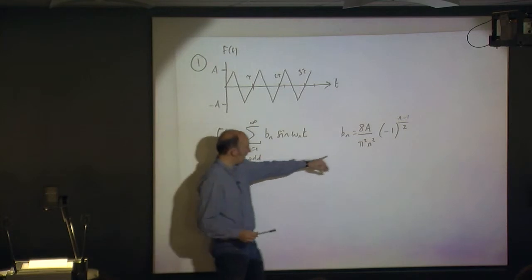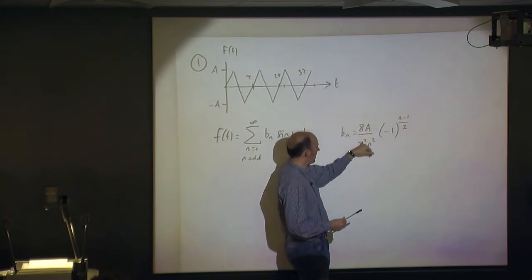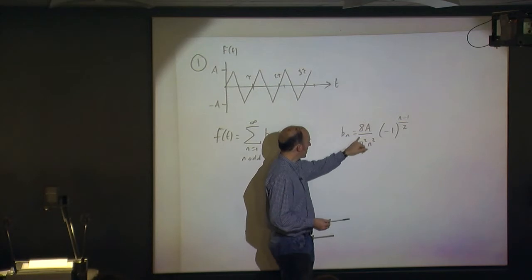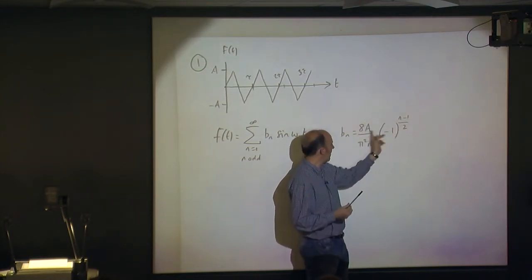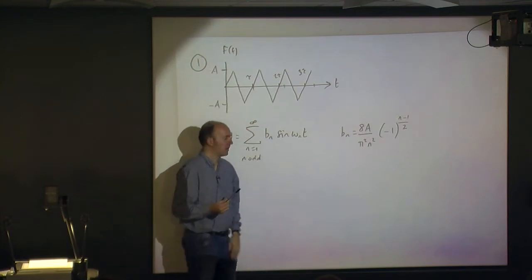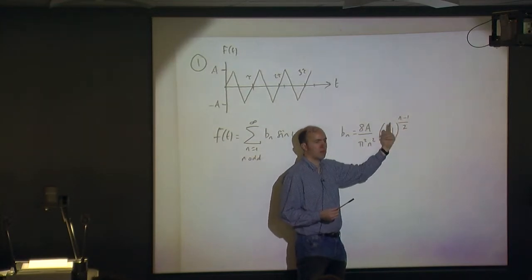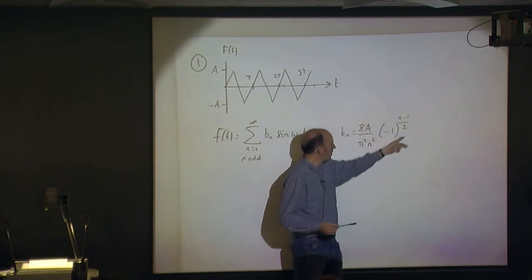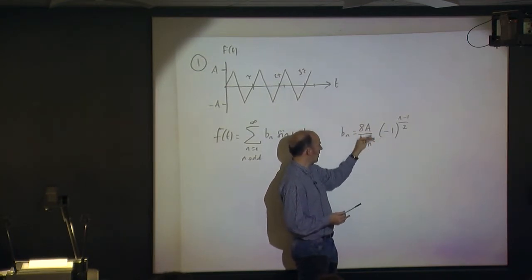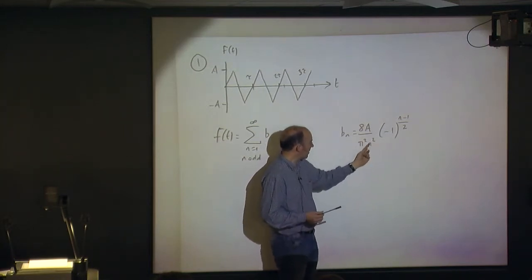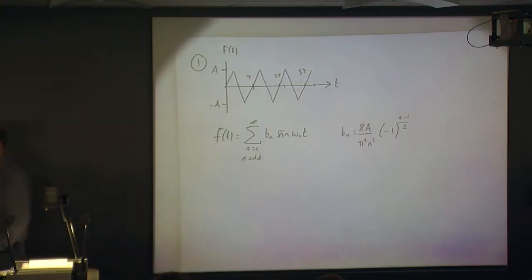So when n is 1, we get 8a divided by π² times (−1)^0, which is 1, so 8a/π². When n is 3, you get 8a/(9π²) with exponent (3−1)/2 = 1, giving −8a/(9π²). When n is 5, the exponent is (5−1)/2 = 2, so minus 1 squared is 1, giving a positive term. This (−1)^((n−1)/2) term controls the sign, alternating plus, minus, plus, minus as n goes up through the odd values.